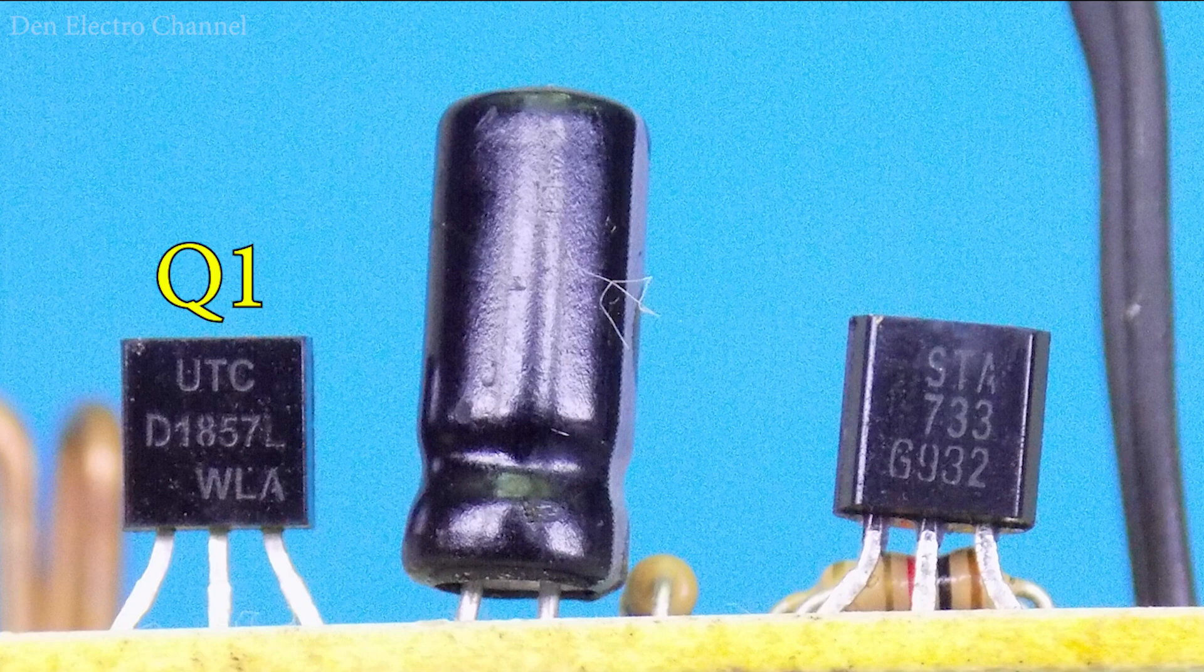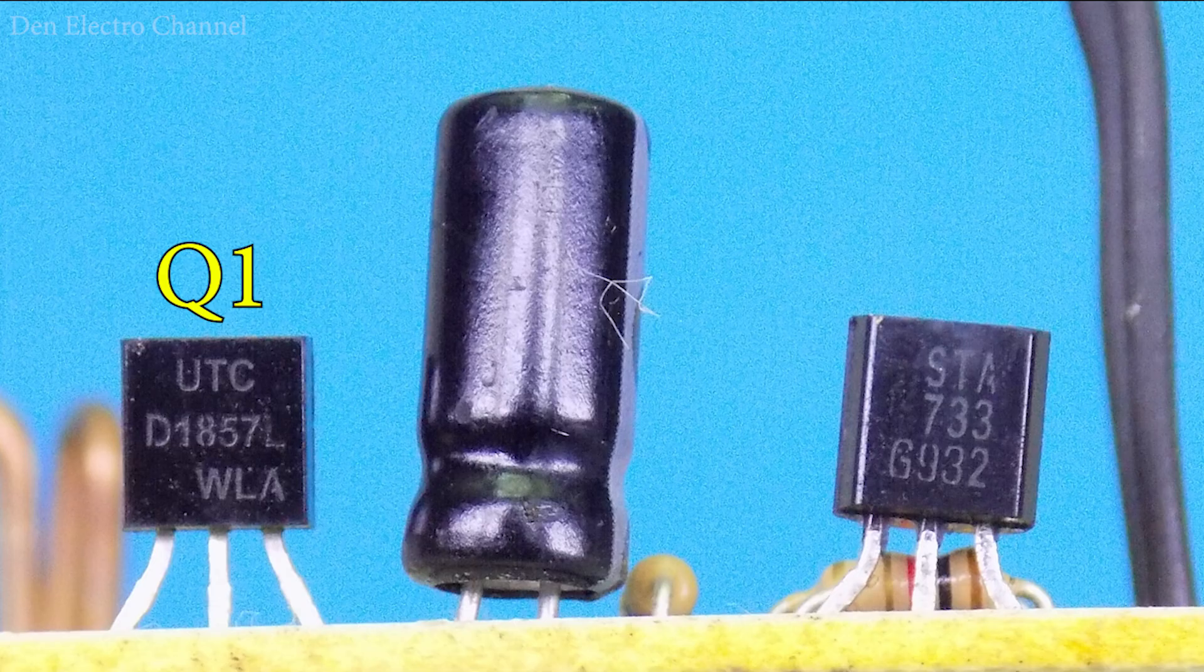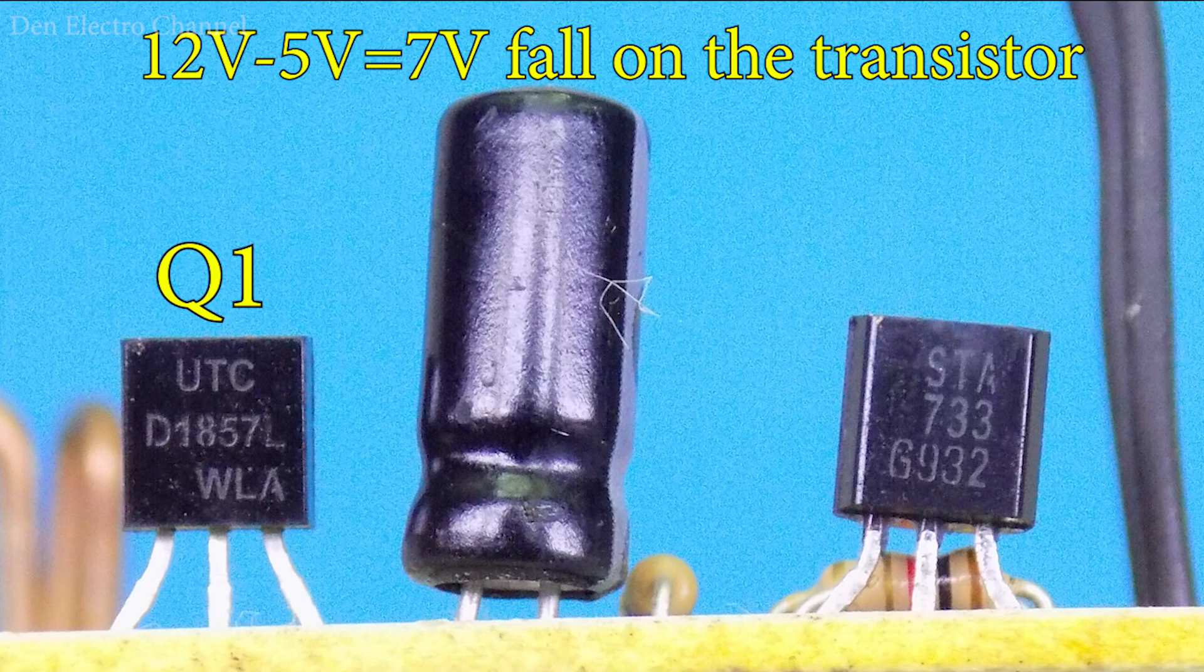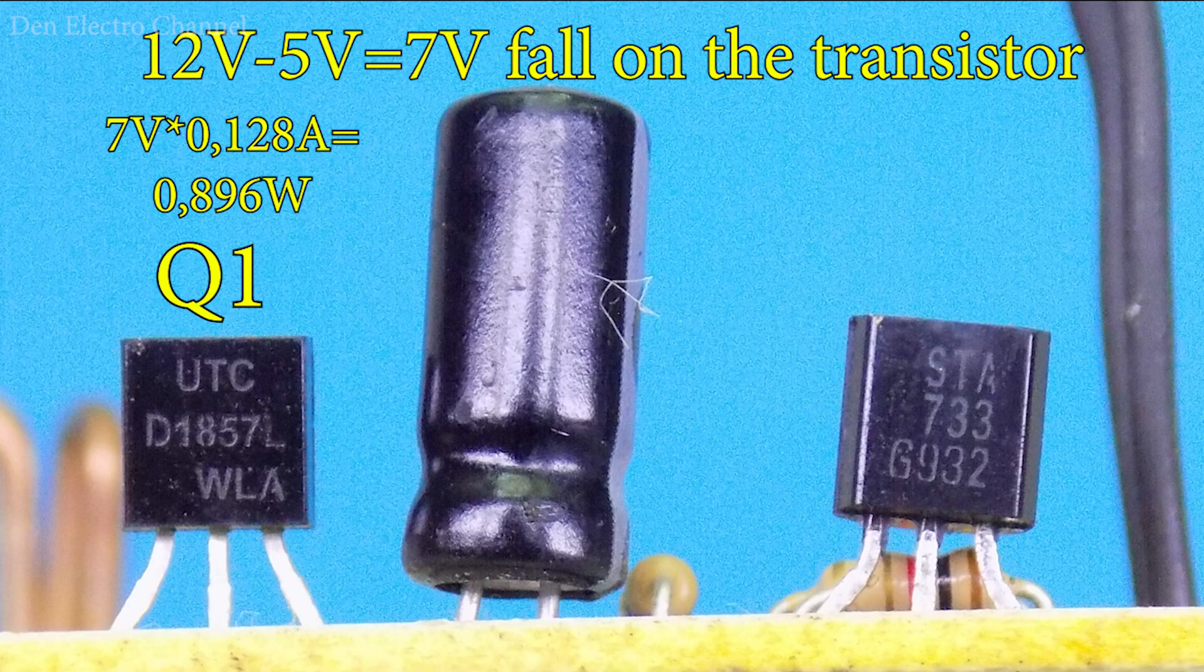By the way, during operation, transistor Q1 heats up quite a bit. This is the transistor through which the current goes to the fan. After all, when the transistor is half closed and only 5 volts go to the fan, the extra 7 volts settle on the transistor. It turns out that with a current of 128 milliamps, it dissipates almost 900 milliwatts in the form of heat on its case. This is almost the maximum of its capabilities, since according to the datasheet it is designed for only 1 watt.